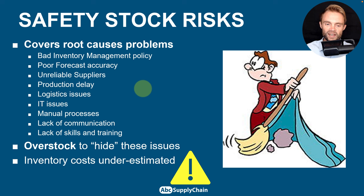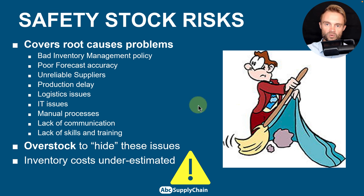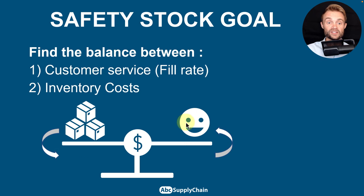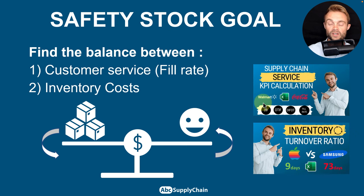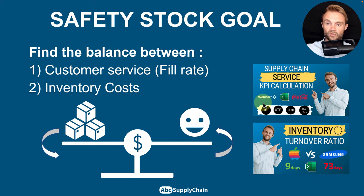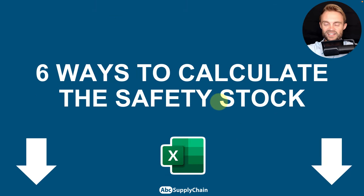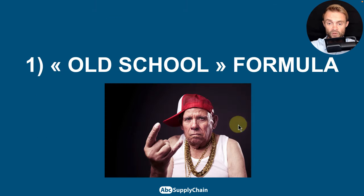The real goal of safety stock is not to increase stock but to find the balance between customer service — fill rate or availability rate — and inventory cost. If you're unfamiliar with these KPIs, I recommend watching my videos on supply chain service KPIs and inventory turnover ratio. Tracking your performance is essential before you can optimize and improve your parameters.